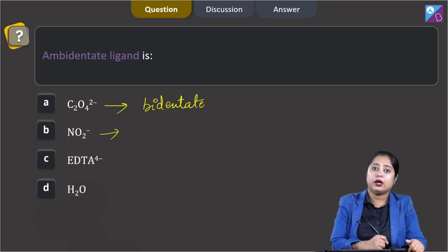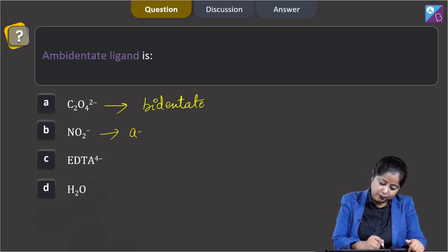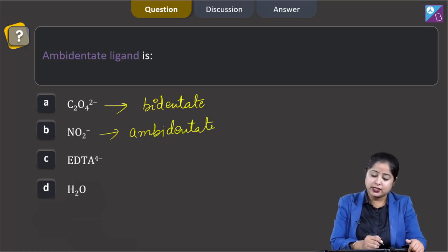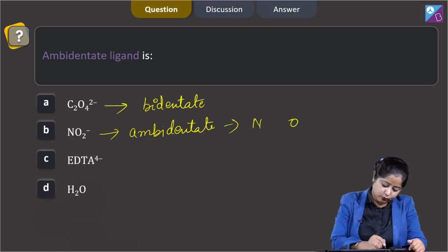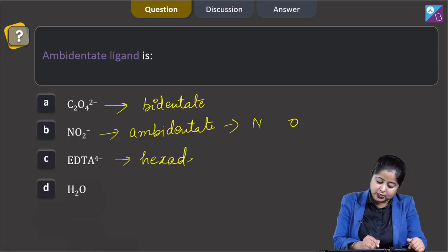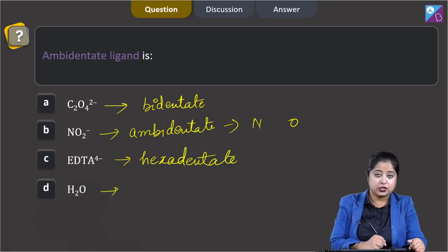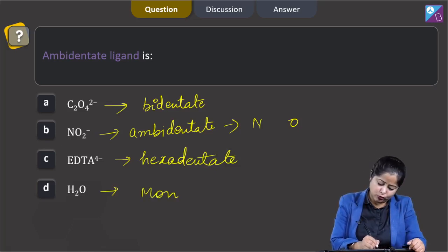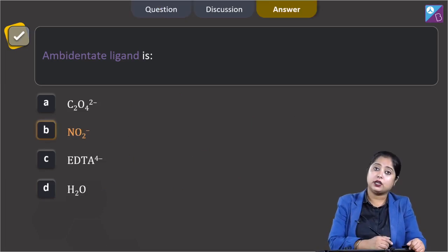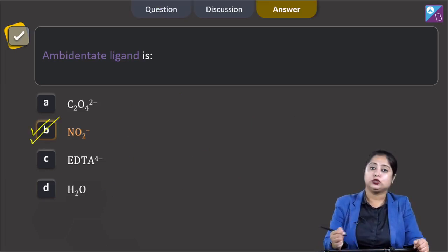NO₂⁻ is an ambidentate ligand with two different donor sites: one is nitrogen and another is oxygen. EDTA⁴⁻ is a hexadentate ligand. H₂O is a monodentate ligand. Therefore, the correct answer is option 2, which is NO₂⁻.